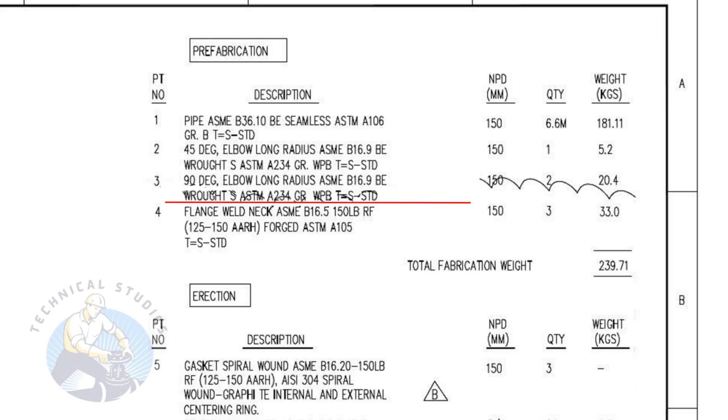Item number three is a standard schedule, 90 degree long radius elbow with bevel ends. The nominal pipe diameter is 150. The quantity is two numbers.